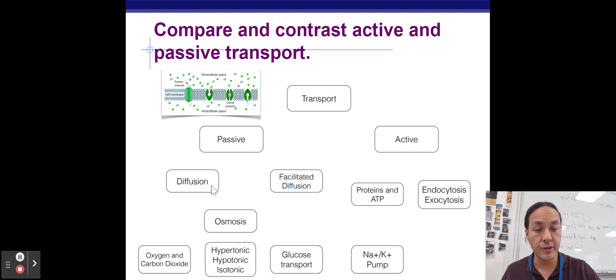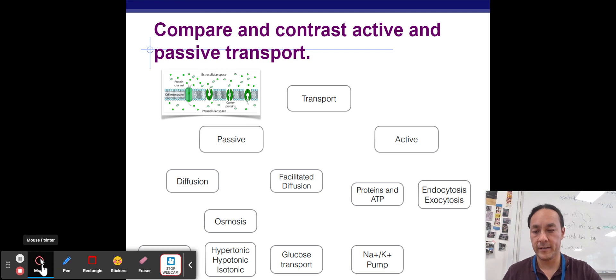Items that move passively do not require energy. And that could be through diffusion, just the movement of molecules from an area of high to low concentration. Or facilitated diffusion, which is high to low concentration as well. But it needs a specific protein to help that. Osmosis deals with the movement of water. And so then, in this video, these would connect as well.